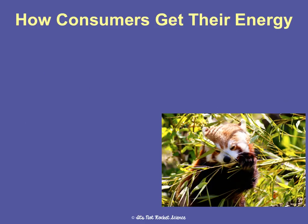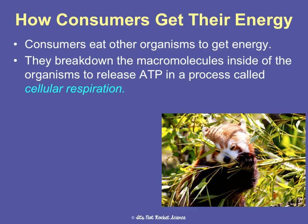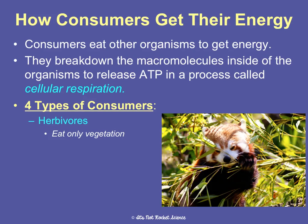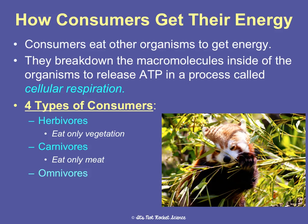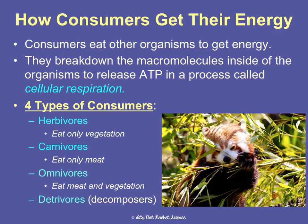Consumers get their energy in several different ways. They eat, and they take those macromolecules and break them down inside to release ATP, which is the usable energy form. That happens in cellular respiration in the mitochondria. There are four types of consumers: herbivores eat only vegetation, carnivores eat only meat, omnivores eat meat and vegetation, and detritivores — also called decomposers — scavenge or eat dead or decaying materials. All four types break down what they eat and release ATP through cellular respiration.